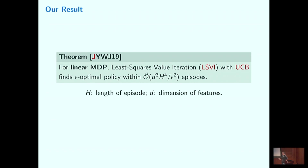Here is what we prove in our paper. We can show that for linear MDPs with no additional assumptions, using the classical algorithm — least squares value iteration with a UCB exploration bonus — we can find an epsilon-optimal policy within d³ H⁴ / ε² episodes, where d is the feature dimension and H is the episode length. Most importantly, this algorithm requires only polynomial episodes and polynomial runtime — everything is polynomial. We are pretty convinced the dependences on H and epsilon are relatively sharp.